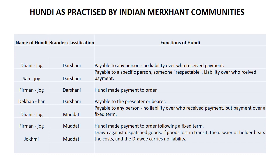Sahajog Hundi was payable to a specific person, often a respectable person, and there was liability over who received the payment. This means the payer was liable — the money had to be given to the specified person and there was accountability for who received it.